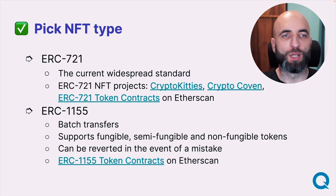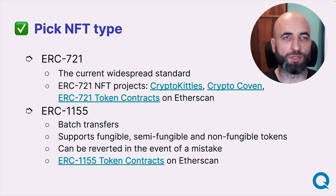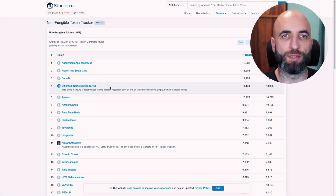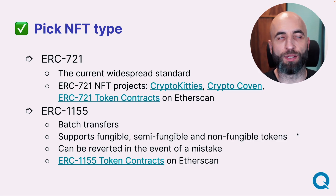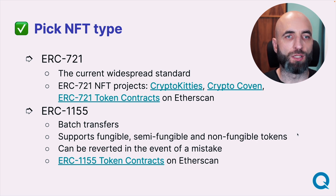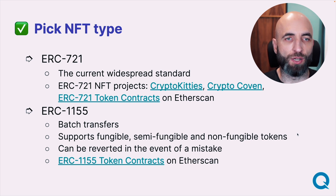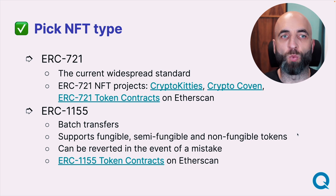Will it be ERC-721 or ERC-1155? ERC-721 is the current widespread standard — almost all major NFT projects are 721 or modifications like 721A. One of the first was CryptoKitties. ERC-1155, on the other hand, supports not just non-fungible tokens, but also semi-fungible or even fungible tokens. It also has features like batch transfers and can be reverted in the event of a mistake — things that cannot be done with 721.